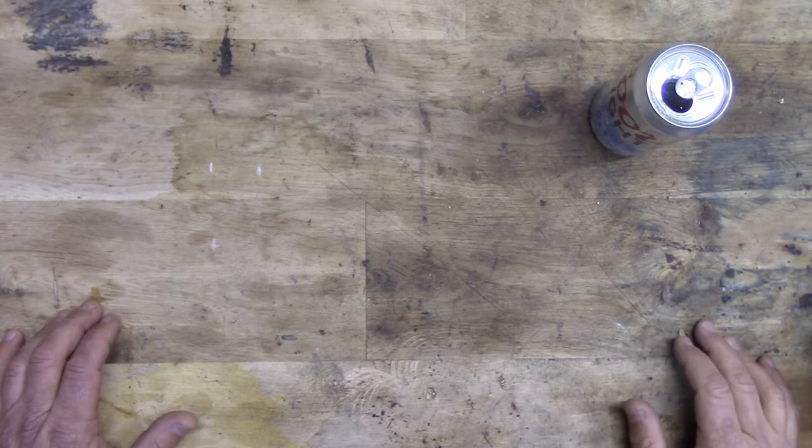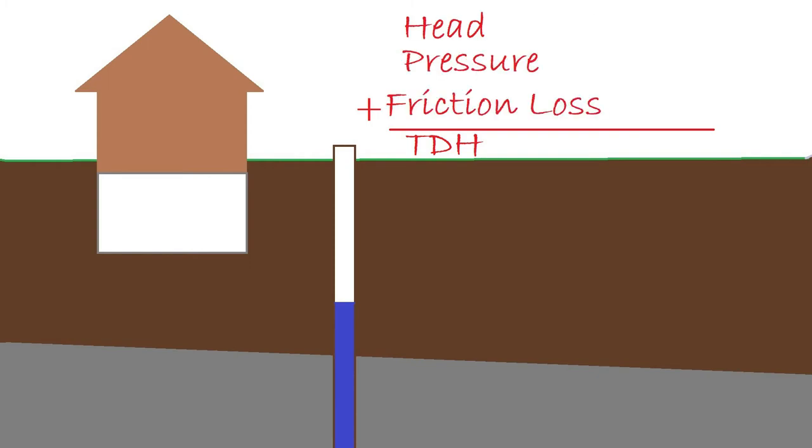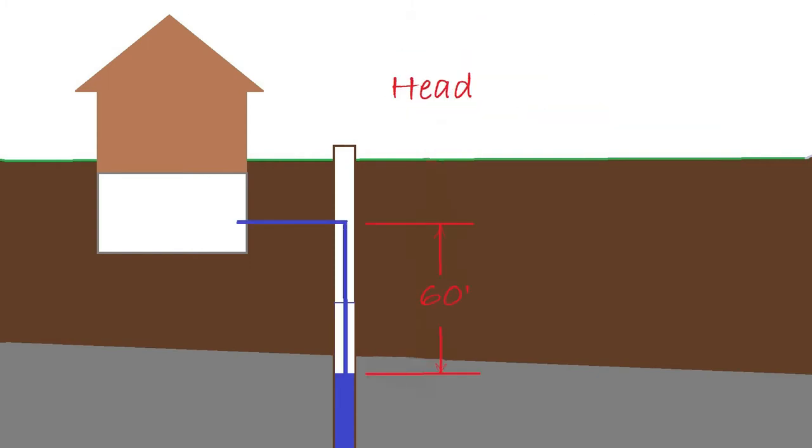To determine what pump to use, we're going to have to figure out our TDH, which is total dynamic head. Total dynamic head is the sum of three values: head, pressure, and friction loss. Head is simply the vertical distance between the pumping level and the highest point of the water system. For simplicity's sake we'll just say that it's the well tank in the basement, and it's measured in feet of head. In our case it's 60.